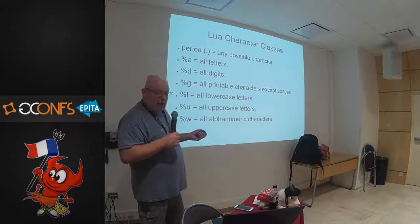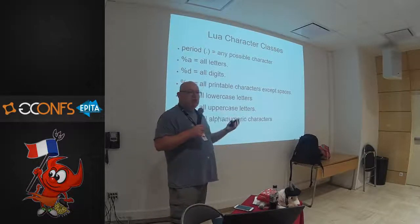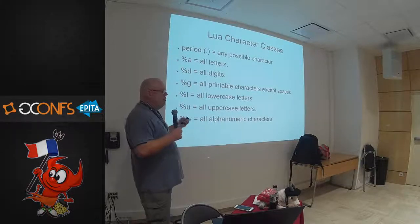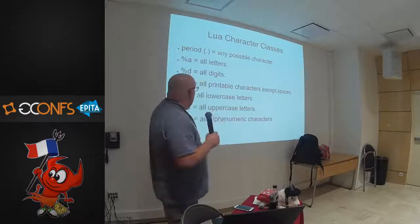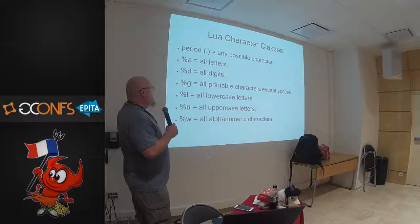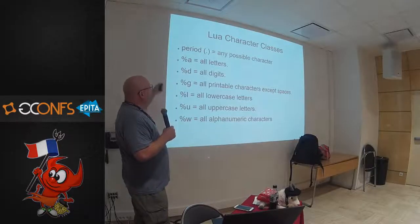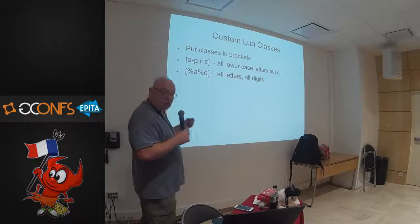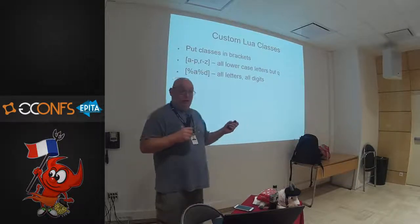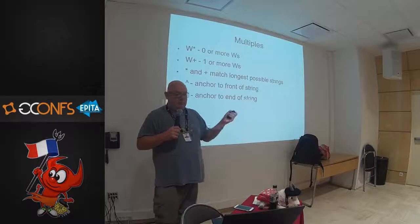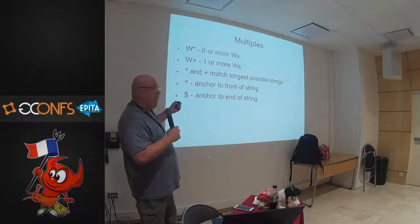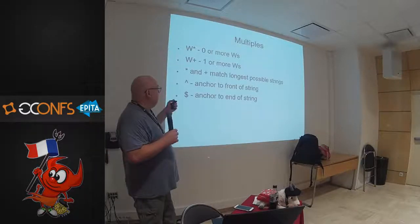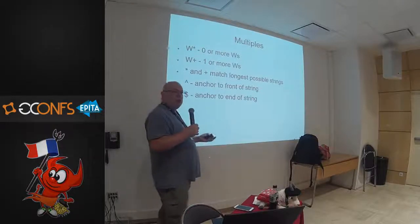I'm going to go a little quickly through this — just trying to let you be aware of what's in it rather than teach you how to build it. You have classes of all digits, all printable characters, all alphanumerics; put classes and characters in brackets. Anchoring to the front and back of a string, one or more, zero or more. You can use all of this to set server names, directory names, and locations.